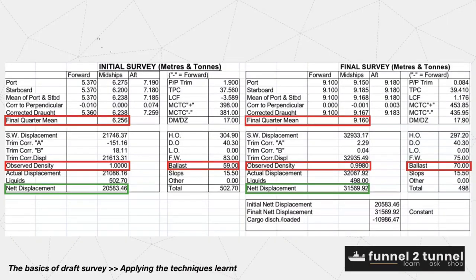Let us now apply the techniques we learnt in our previous video on draft survey and check how you can use them to ensure that optimum cargo is loaded or discharged. Our aim at the loading port should be to obtain a slightly more constant at the initial draft survey and slightly less cargo at the final draft survey. This is necessary to keep a certain amount of cargo up your sleeve so that you do not have a shortage at the discharge port. To get more constant during the initial draft survey, you should read the draft slightly more than actual, or show ballast slightly less than actual, or show water density slightly more than actual — in all three cases resulting in a slightly higher net displacement.